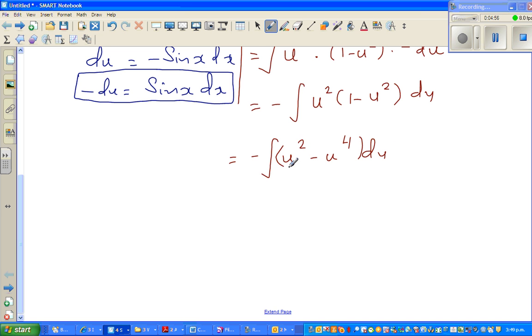You can distribute this du. So this is minus integration of u squared minus integration of u to the power 4 du. This minus is sitting out. So minus integration of u squared is u cubed over 3 minus u to the power 5 over 5 plus the arbitrary constant.